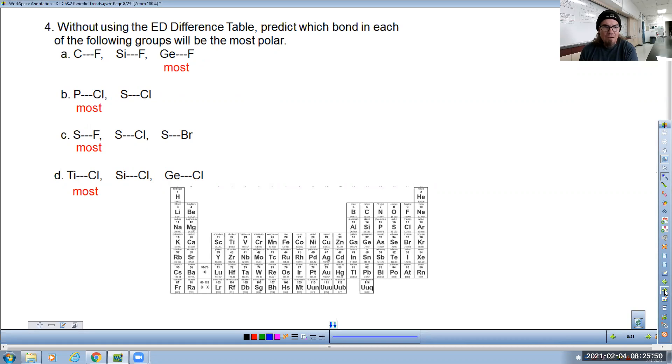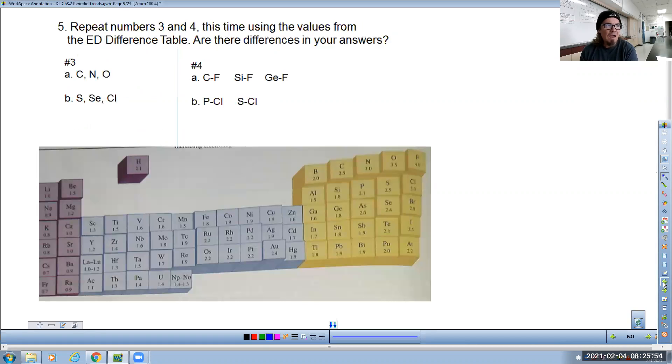And then question number five, I did have at least one person ask me about what do we do on number five. On number five, we're actually supposed to look at the electronegativity difference between the different elements. So I'm going to just skip right to number four, because this is usually the way this is formatted for number five is re-answering number four in terms of the electronegativity differences. So what you're going to do is you're going to take the numbers. So for carbon, it's a 2.5 and for fluorine, it's a 4.0. Take the larger number minus the smaller number to find out the electronegativity difference.